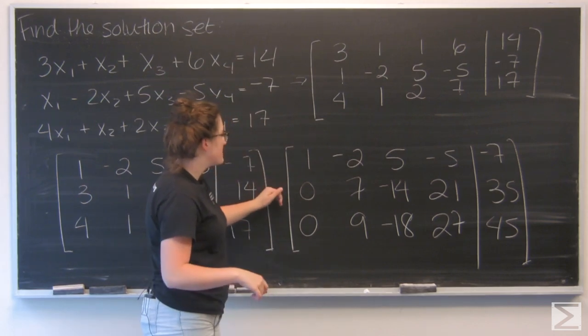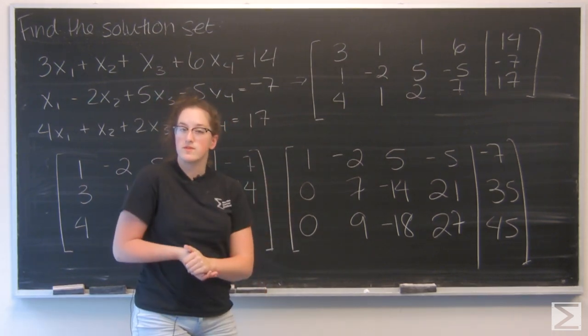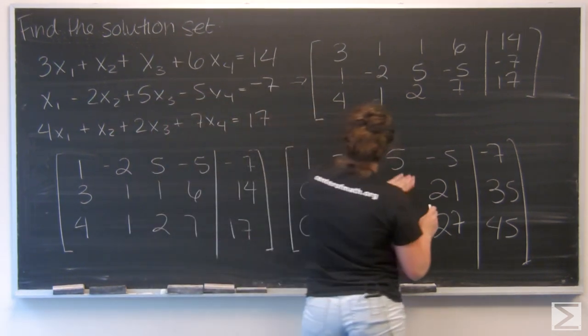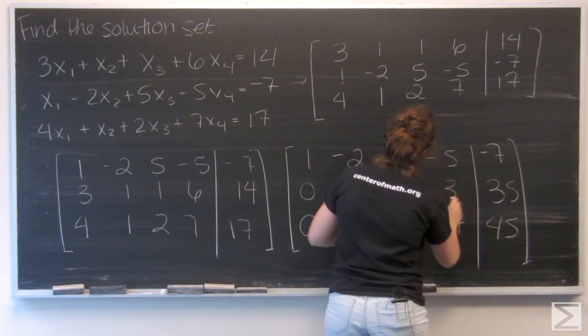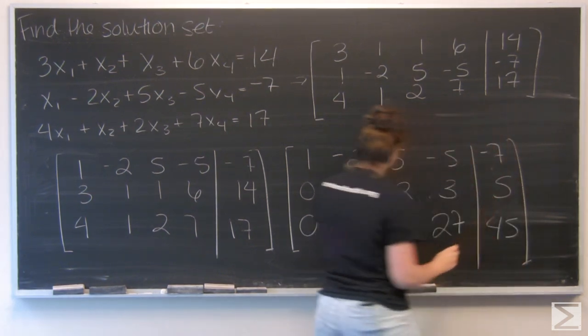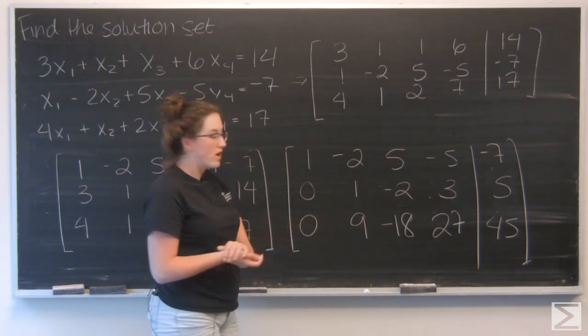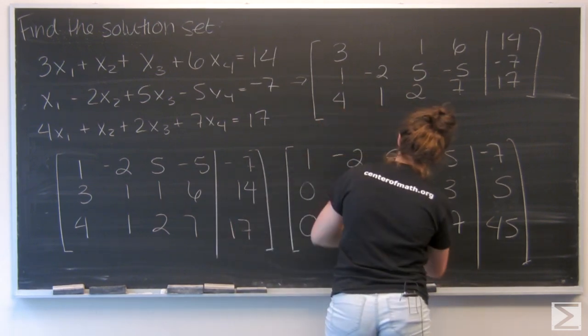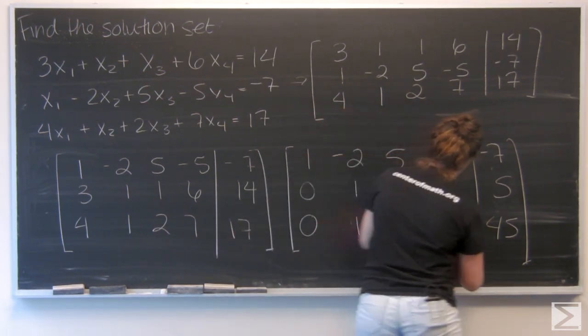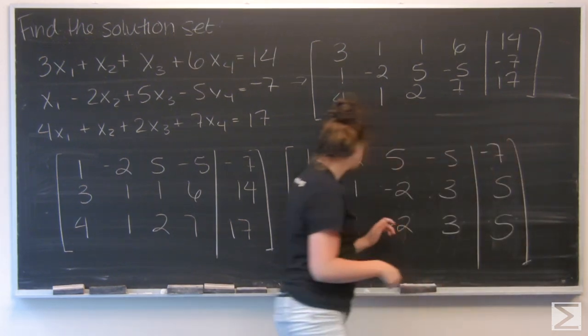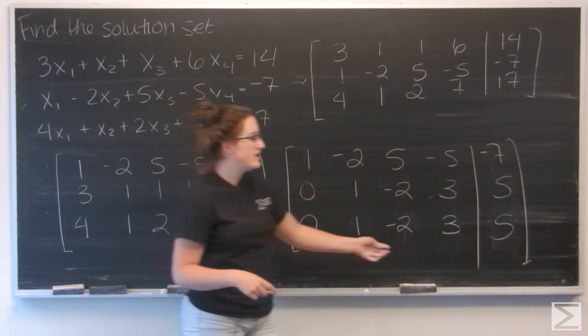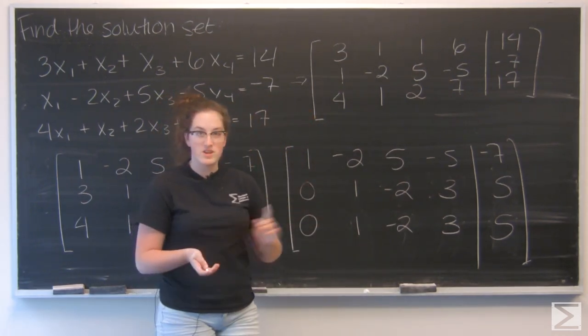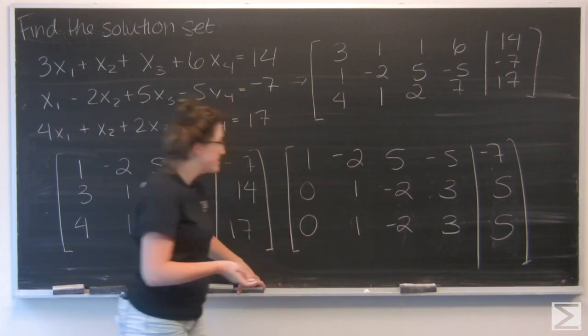So I can see that my second row, all are multiples of seven, so I'm going to just divide everything through by seven, so I'm going to get one, negative two, three, and five. And I can do the same for the third row, this time dividing by nine. And I get the same row again: one, negative two, three, and five. So I'm going to subtract the second row from the third to clear out that third row, and I'm just going to get a row of zeros.